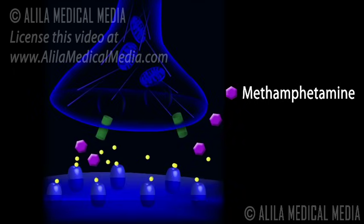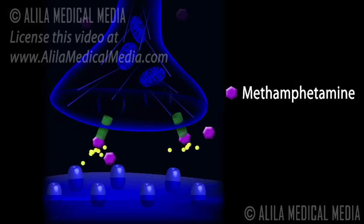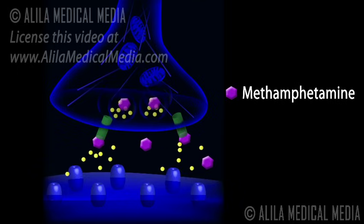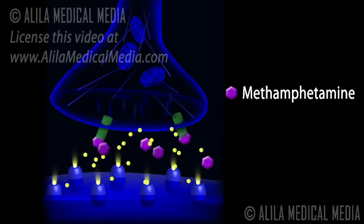Methamphetamine, a psychostimulant, acts similarly to cocaine in blocking dopamine removal. In addition, it can enter the neuron into the dopamine-containing vesicles where it triggers dopamine release even in the absence of action potentials.